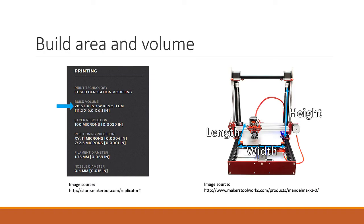One of the most obvious and important specifications of a printer is how big it is. If you want to print a model larger than the printer you're working with, you're going to have a bad time. Always make sure that your model will fit in the build area — its length, width, and height have to be smaller than that of the printer.